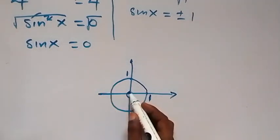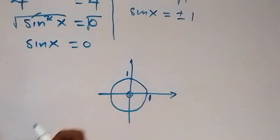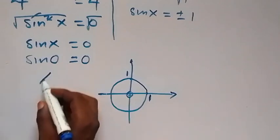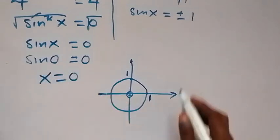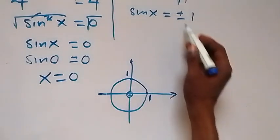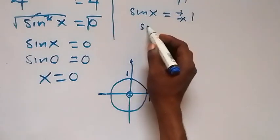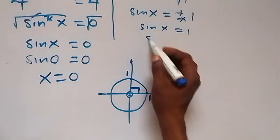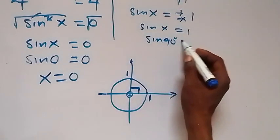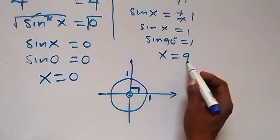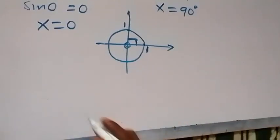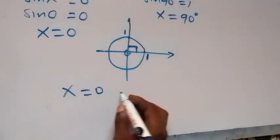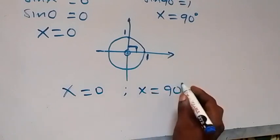For sine x equals 0, we have x equals 0 degrees since sine 0 equals 0. For sine x equals 1, since x is between 0 and 90 degrees, we have sine 90 degrees equals 1, meaning x equals 90 degrees. Therefore the values of x in this problem are x equals 0 degrees and x equals 90 degrees.